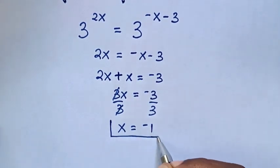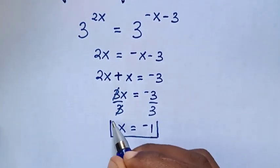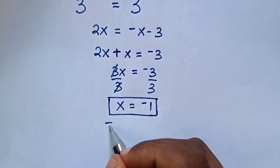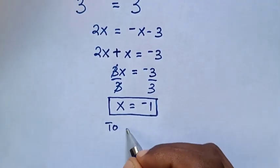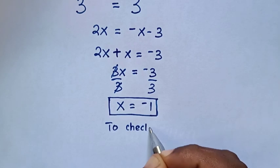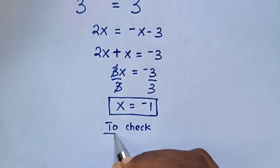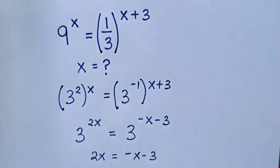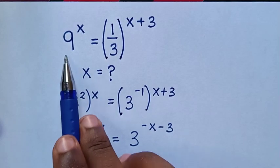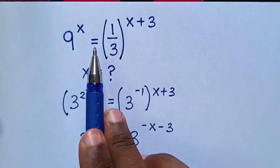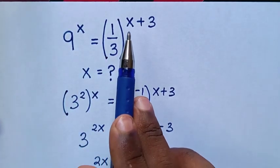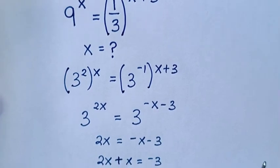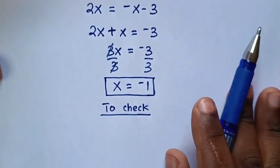So this is the final answer: x is equal to negative 1. Now, to check if the value of x is correct, from our problem, which is 9 power of x is equal to 1 over 3, brackets, power of x plus 3.